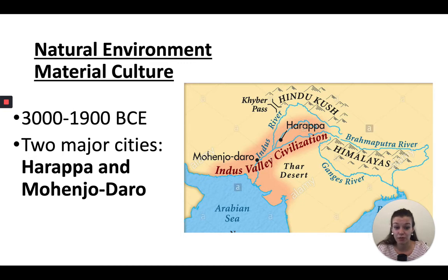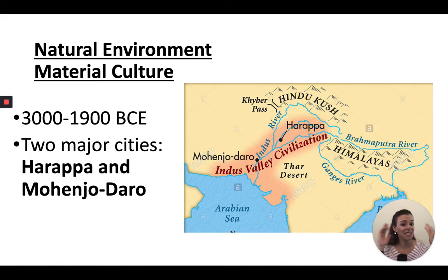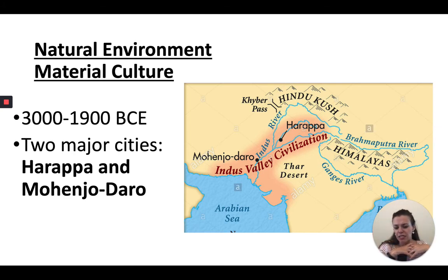Harappa has evidence of writing, but we can't translate it. We know that these cities were huge — Harappa had a population of 35,000 and Mohenjo-Daro was much larger. We know the cities were well-organized, with sewer systems, streets laid out in grids, and uniformity in construction. That indicates urban planning and a strong central authority — someone has to make those decisions. We see that both large and smaller settlements are uniform, indicating extensive communication and trade.